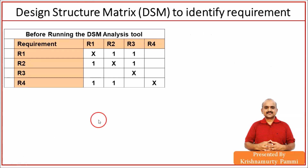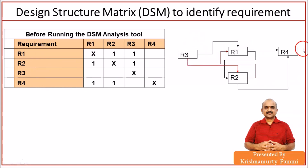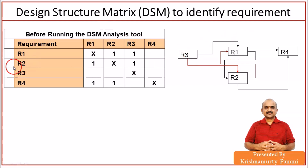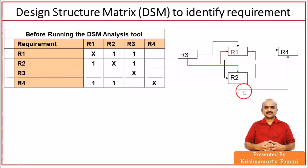For example with four requirements: Requirement 1 has Requirement 2 and Requirement 3 as predecessors. For Requirement 2, Requirement 1 and Requirement 3 are predecessors. Requirement 3 has no predecessors. For Requirement 4, Requirements 1 and 2 are predecessors. When you run the Design Structure Matrix tool, it gives you color-coded output showing which tasks are series, which are parallel, and which are coupled — so you can properly analyze and potentially decouple coupled tasks.